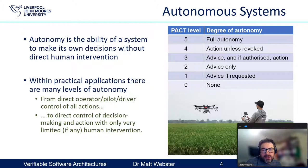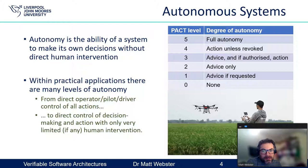So what do we mean by autonomous systems in general? Autonomy basically is the ability of a system to make its own decisions without direct human intervention. Within practical applications, there are many different levels of autonomy. One of these taxonomies is called the PACT taxonomy — Pilot Authorization and Control — which relates to autonomous systems for use in aviation.